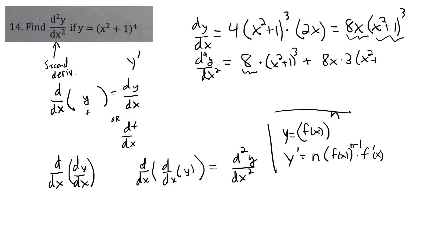leave the first alone, and take the derivative of the second. Same thing again. Bring down the 3, take it to the 2. Don't change the inside. And remember to multiply that by the derivative of the inside, which is 2x. Okay. So we got an 8 times x squared plus 1 quantity cubed.